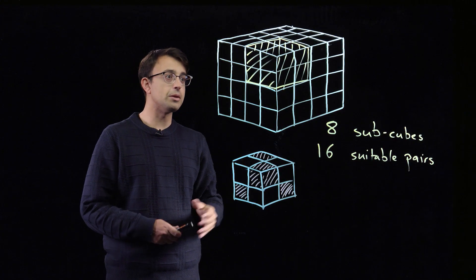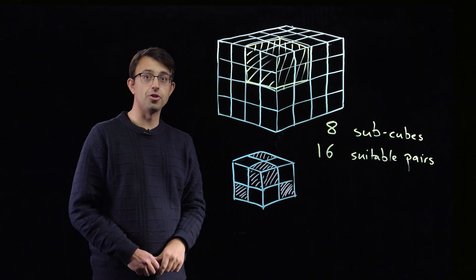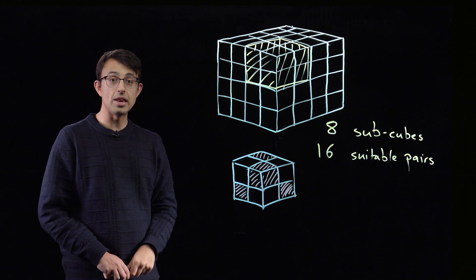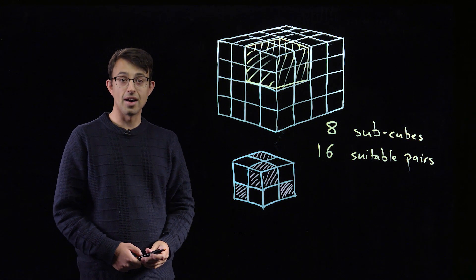So that gives us 16 pairs in total of cubes that are the right distance apart, and within each pair they have the same flavour.